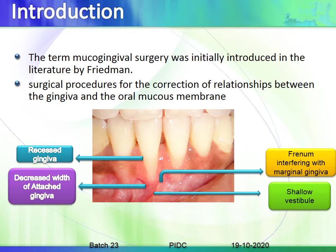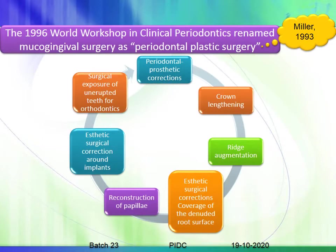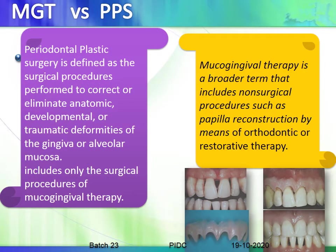These are mucogingival defects, and periodontal plastic procedures help in correcting them. The 1996 World Workshop in Clinical Periodontics named mucogingival surgery as 'periodontal plastic surgery,' which included periodontal prosthetic corrections, crown lengthening, ridge augmentations, aesthetic surgical corrections, coverage of the denuded root surface, reconstruction of the papilla, aesthetic surgical correction around implants, and surgical exposure of unerupted teeth for orthodontics.